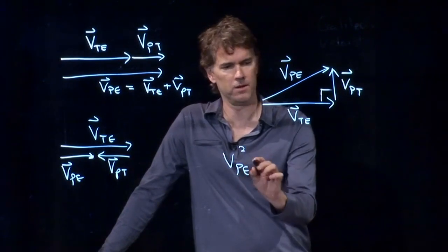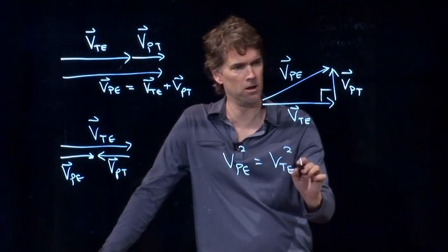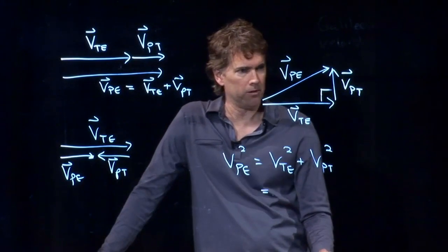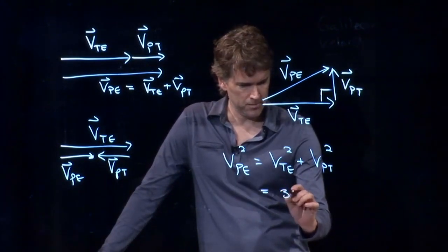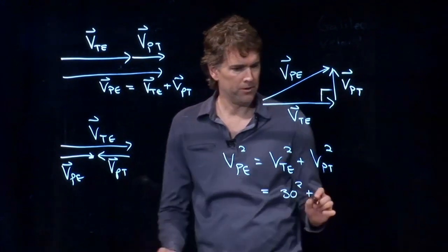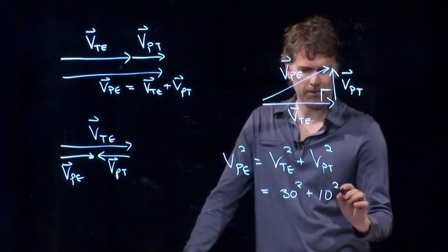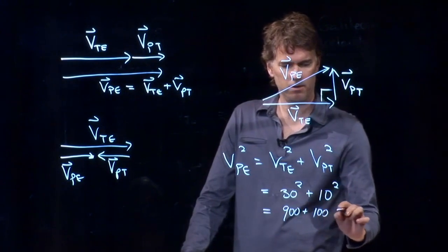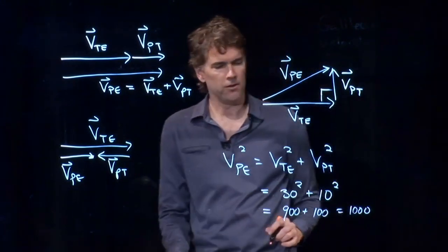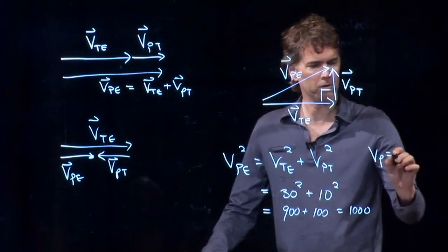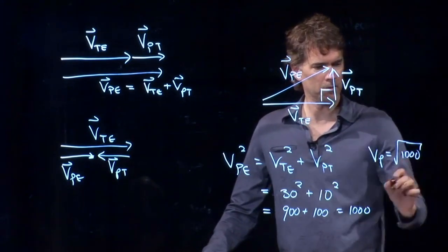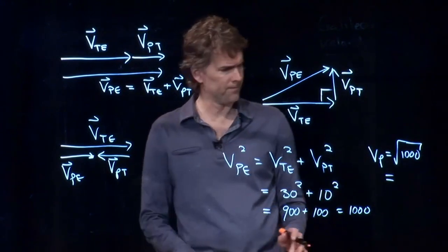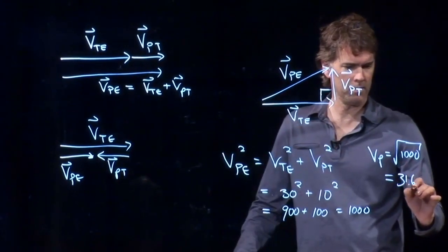V_PE squared equals V_TE squared plus V_PT squared. And what did we say it was? The train relative to the Earth was 30 miles per hour. The person relative to the train was 10 miles per hour. So we get 900 plus 100, which is 1,000. And so V_PE equals the square root of 1,000. And we punched this in earlier, and what did we get? We got 31, I think. 31.6 miles per hour.